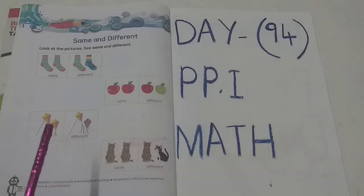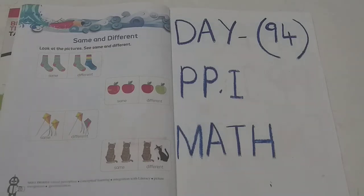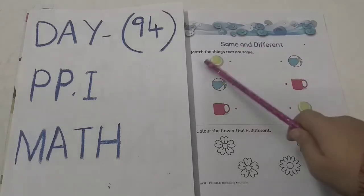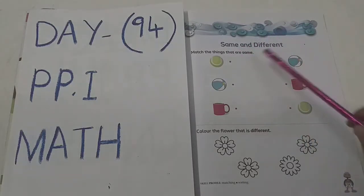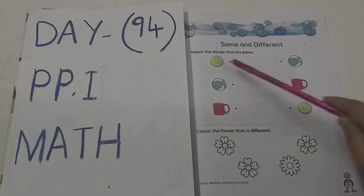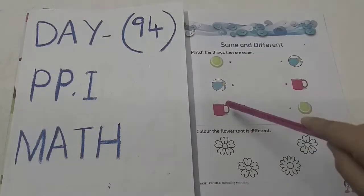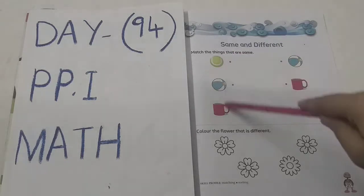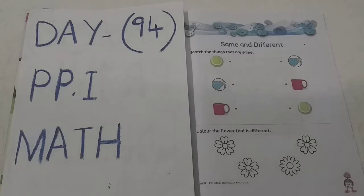So this is the same and different concept. We have an activity also. Let's do the activity — are you ready? Same and different. Match the things that are same. We have to see these pictures and match the same pictures. See, this is a ball, this is also a ball, and this is a cup. We have to match same pictures.